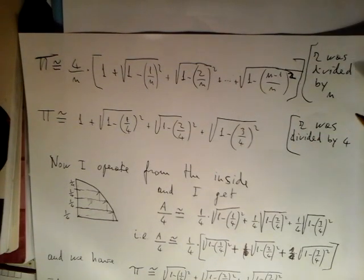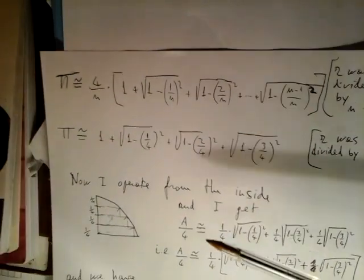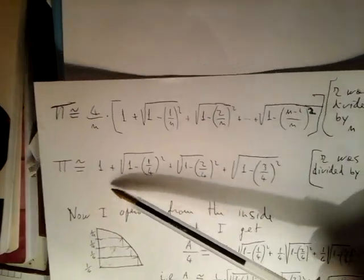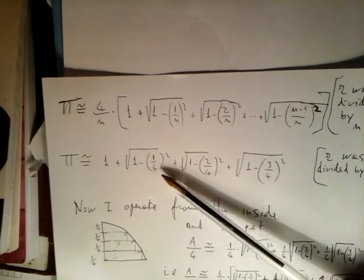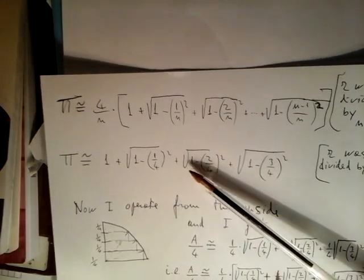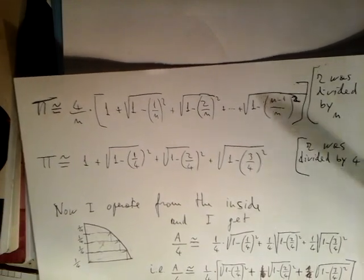This result was obtained when r was divided by n. Instead, when we divided r by 4, we got this result here: pi equals approximately to 1 plus square root of 1 minus 1 over n squared, plus square root of 1 minus 2 over n squared, plus square root of 1 minus 3 over n squared.